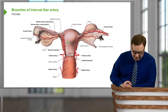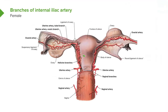Looking at the female, the ovarian artery comes from the aorta, not from the internal iliac. Looking at the specific branches supplying the uterus and vagina from the internal iliac, we have the uterine artery supplying the body of the uterus. It runs within the broad ligament and forms a collateral circulation — an anastomosis — with the ovarian arteries, again showing the potential for links between the internal iliac and the aorta.